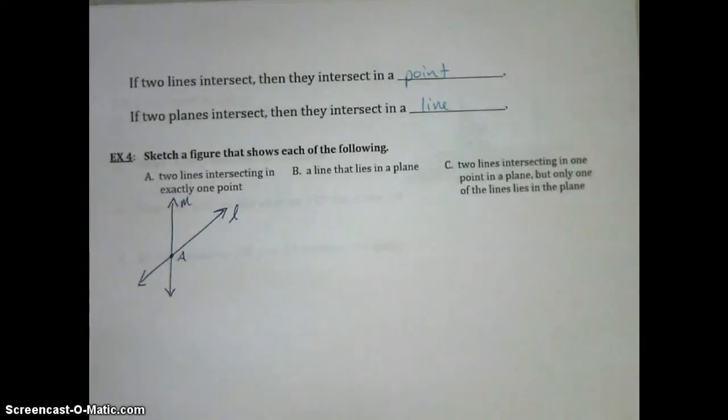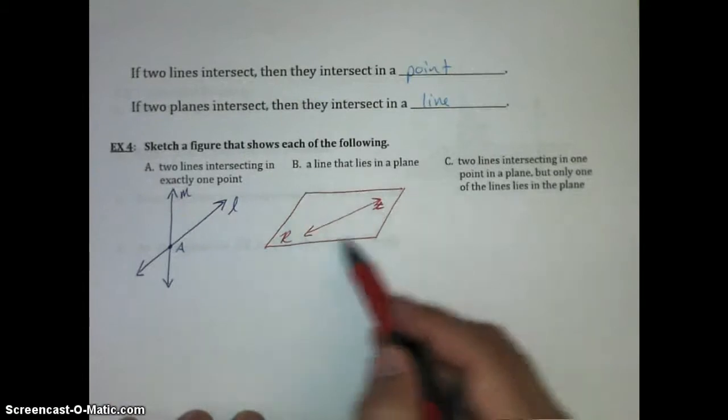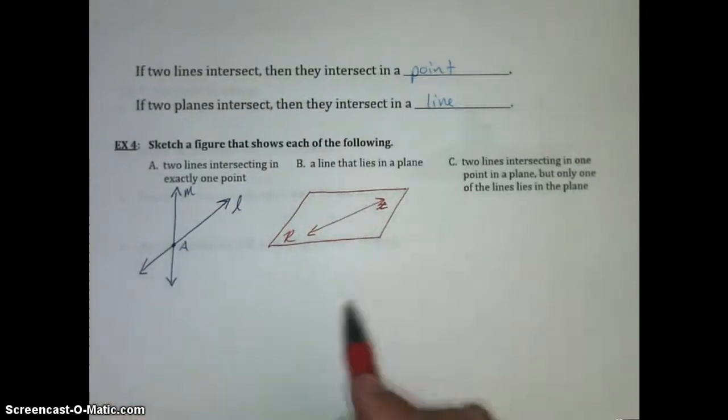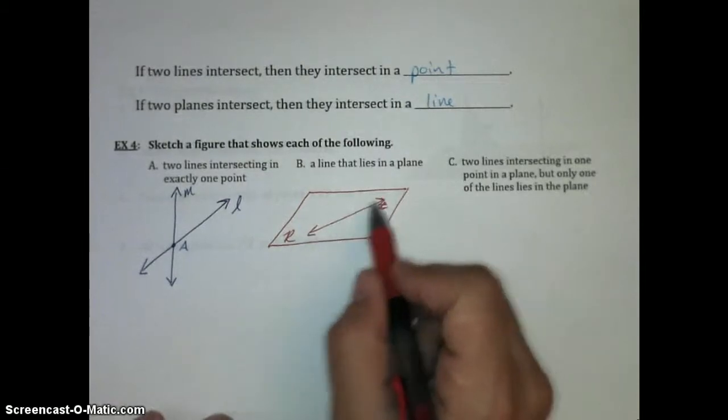For part B, you should get something that looks a little bit like this. I've drawn plane R. If you're having a hard time drawing a plane, just draw a parallelogram. It looks like a rectangle that's laying down on its side a little bit. And we've got a line, T, that is in plane R.